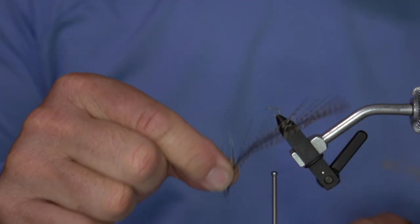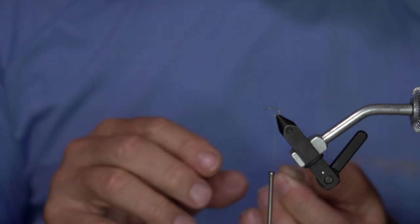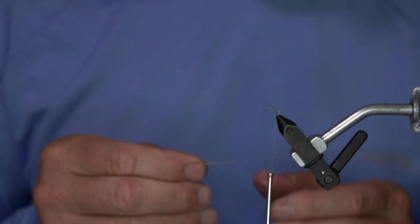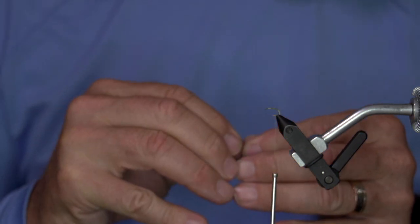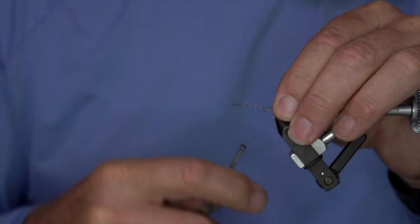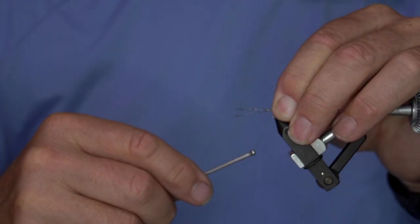So for the tail, I'm going to use Coq de Leon because it's a fantastic tail fiber. And I'm going to get three, four of them, something that suggests nymphiness because that's what I'm tying on the bottom.